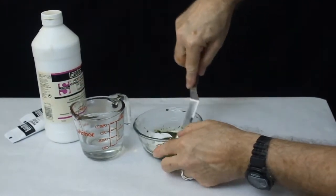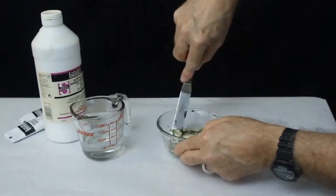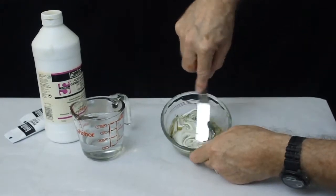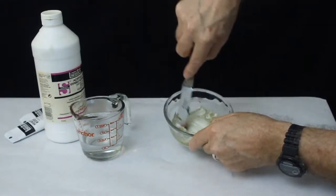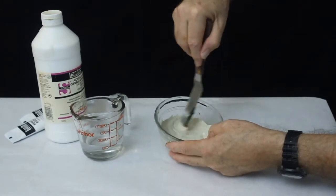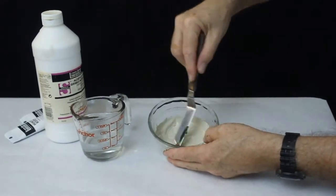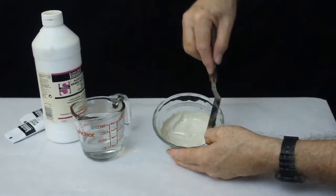I've had a student or two over the years accidentally use their oil colors when mixing their gesso. My advice is don't do it. You'll have to clean the mess up, and you'll have to clean your brush out before starting over. Always use acrylic products with this gesso.